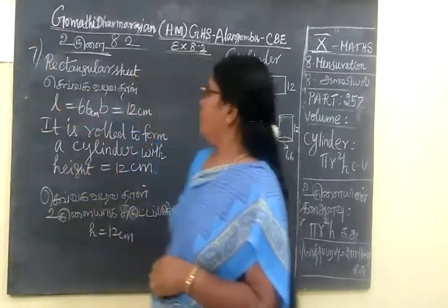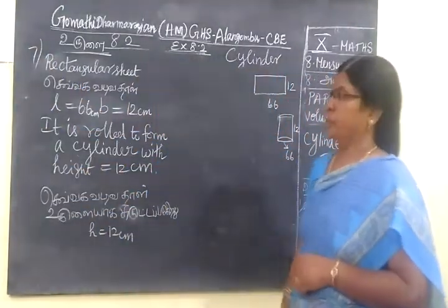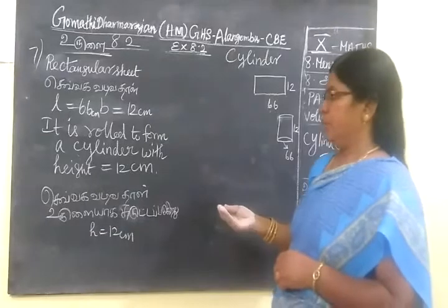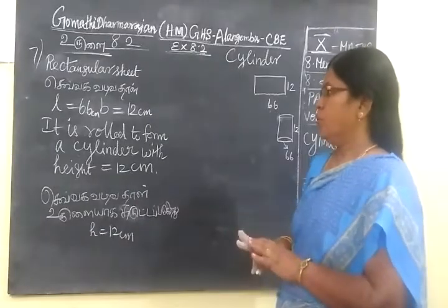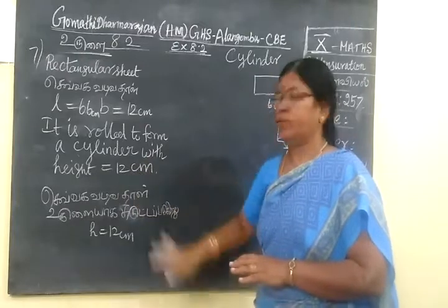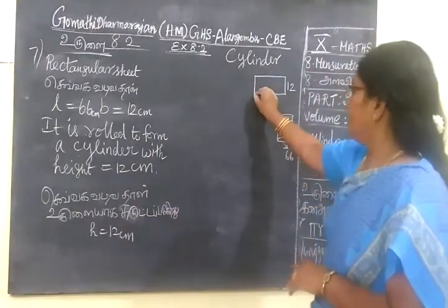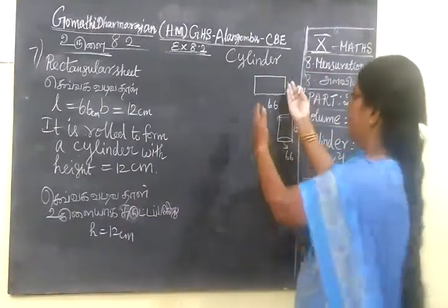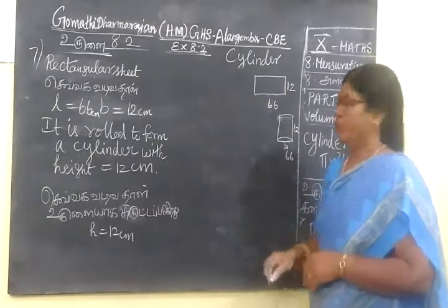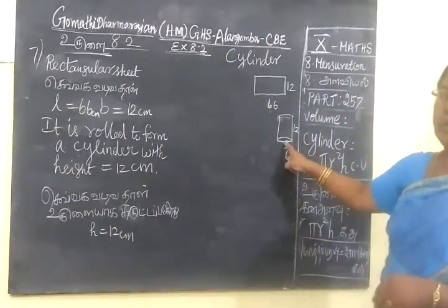It is given a rectangular sheet. In the rectangular sheet, it is rolled to form a cylinder with a height 12 cm. It is a rectangular sheet. In the rectangular sheet, it is a fold bundle. Fold bundle itself can be a cylindrical shape.